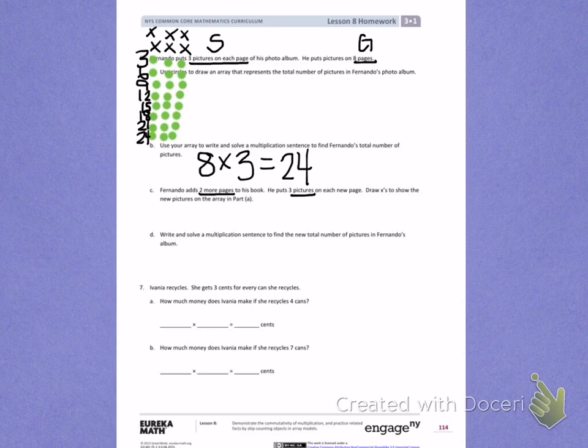Letter D. Write and solve a multiplication sentence to find the new total number of pictures in Fernando's album. Fernando now doesn't have eight rows. He has ten rows, because we added two more. There are still three pictures on each row.